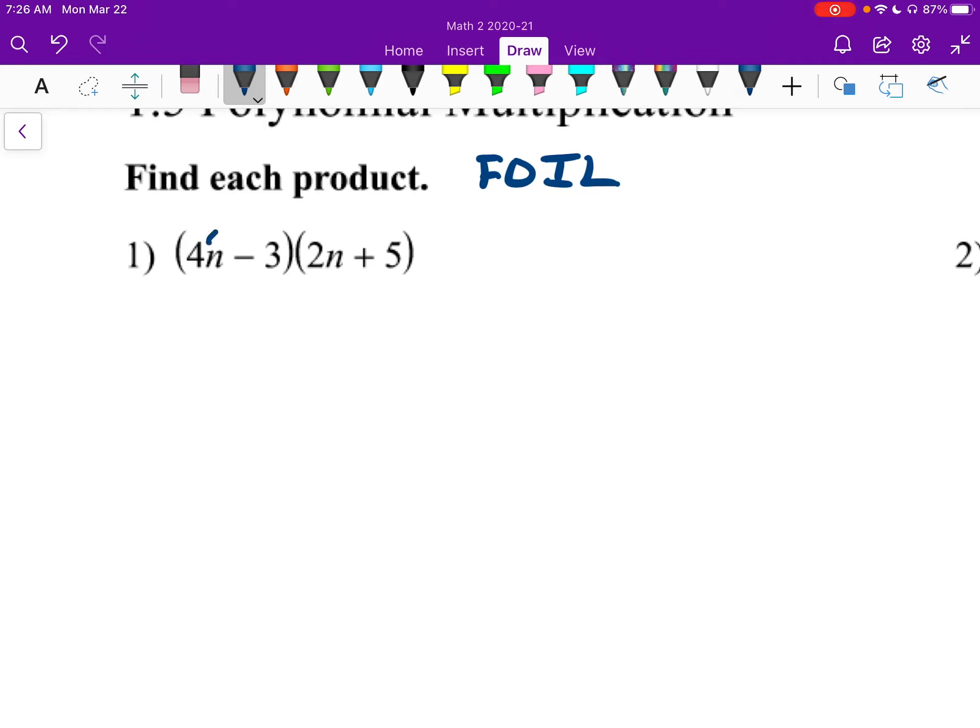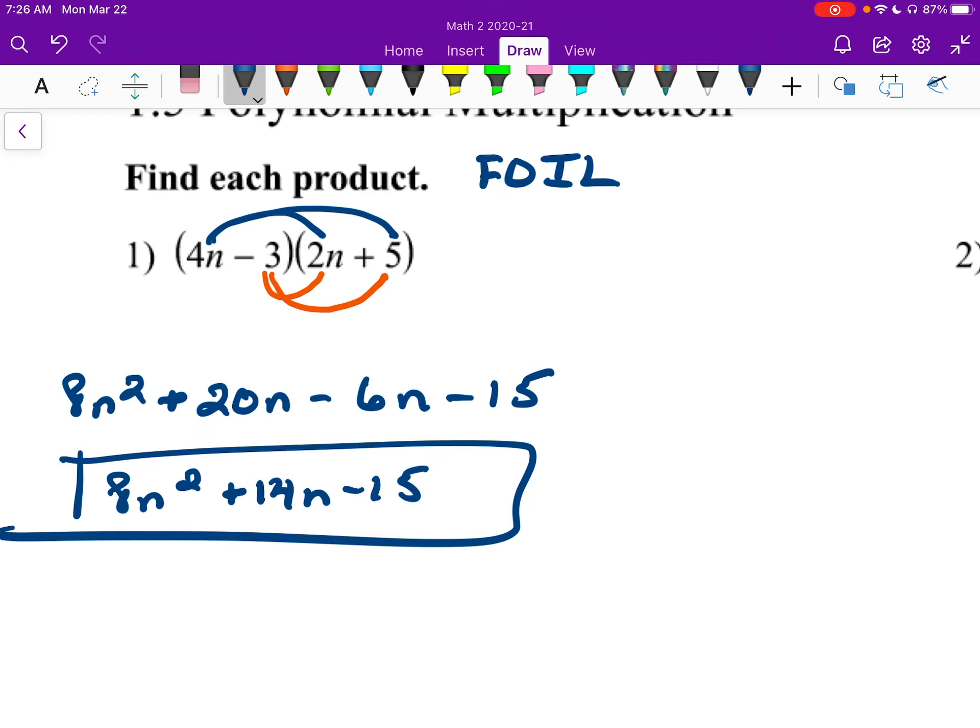I take the 4n and distribute it to both of these, and then I take the other, the negative 3, and distribute it to both of the others. Alright, so everything gets multiplied. So I'll have 8n squared plus 20n minus 6n minus 15. Now I combine like terms, I'll have 8n squared plus 14n minus 15. And that's that.